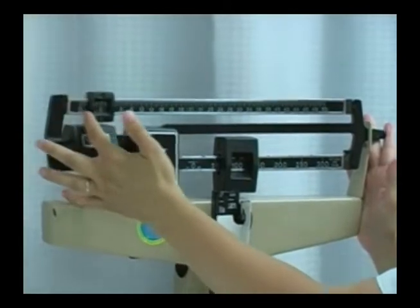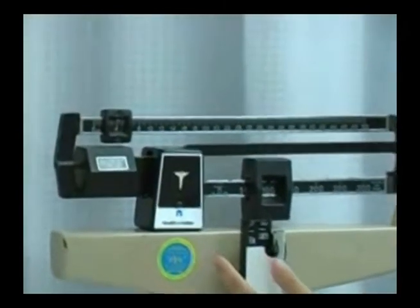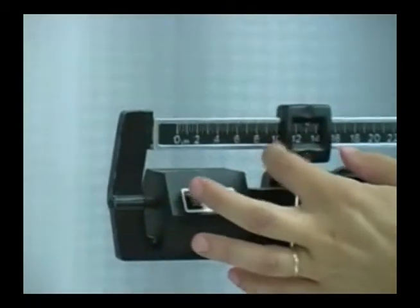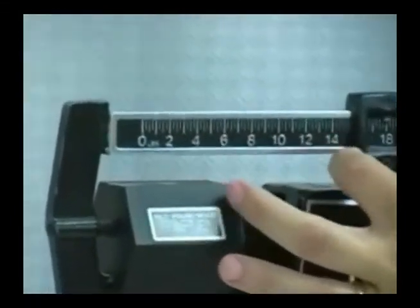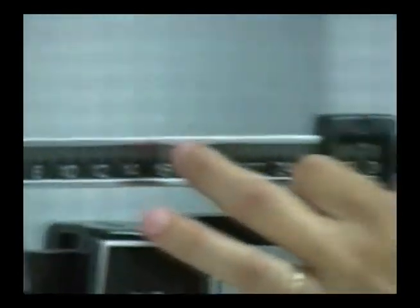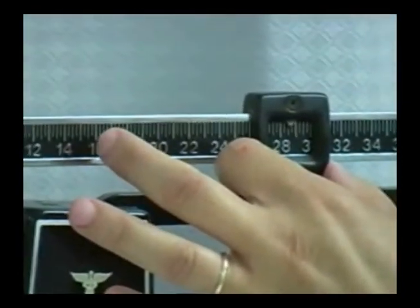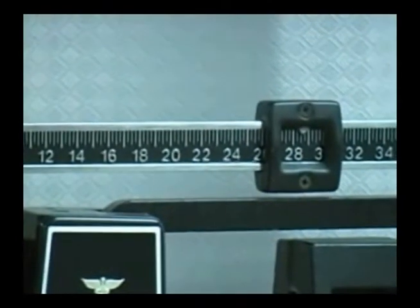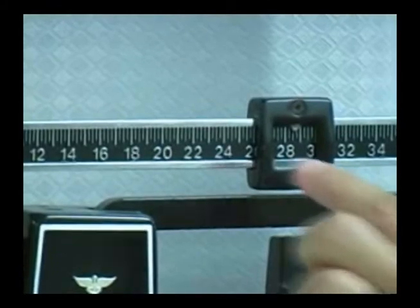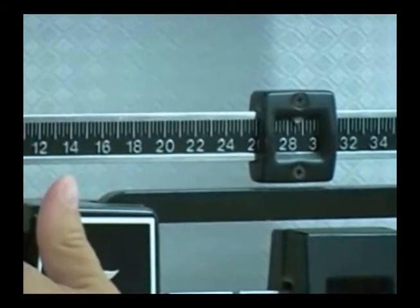Then you also have to try to get this to balance out again. You have to move this smaller number up here. Let's say your patient weighs right here. You'd have to take 100 and add the 28 pounds, but if you notice here, these are marked off in even numbers,